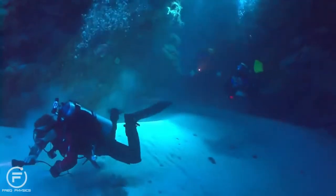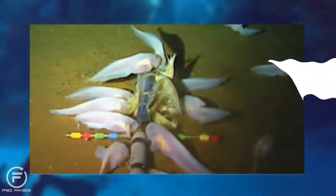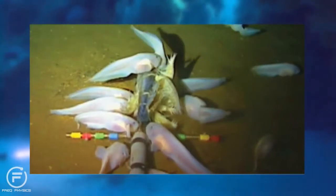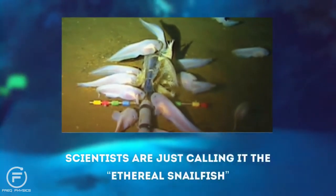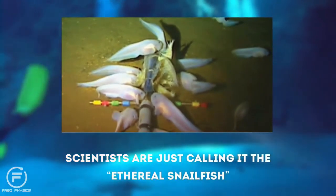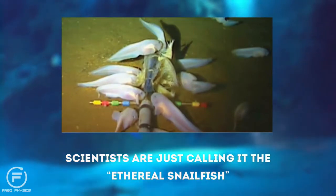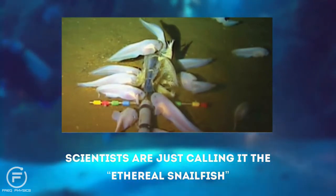But that's not all. There was another fish species scientists managed to film at the same depth. Its body was so delicate that someone compared it to thin paper floating through the water. Since it hasn't been caught yet, the fish doesn't have an official name. Scientists are just calling it the ethereal snailfish. Or how about Bob? Bob the fish.